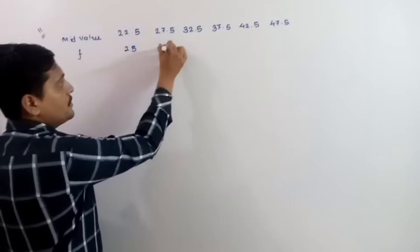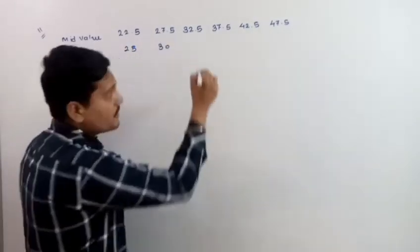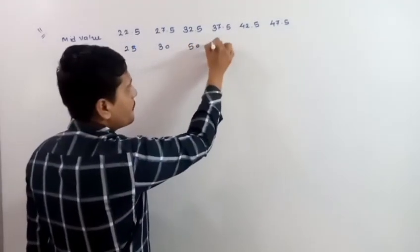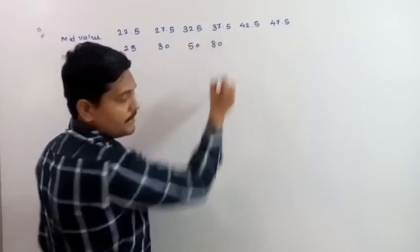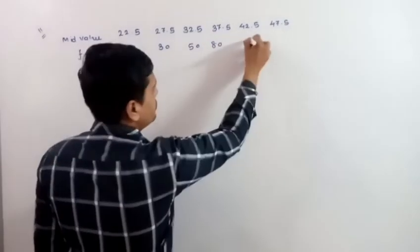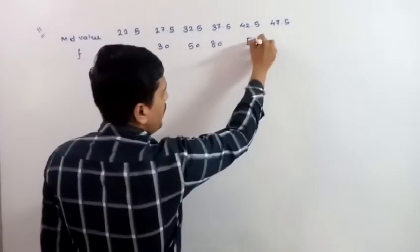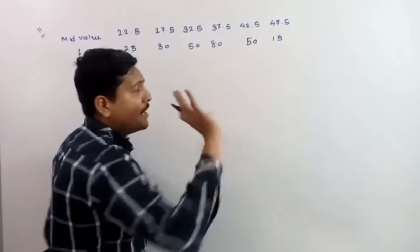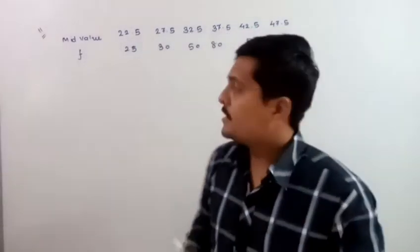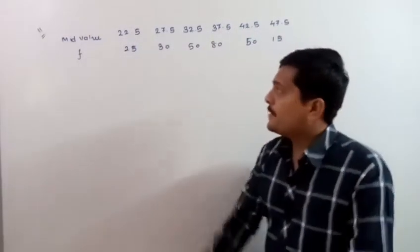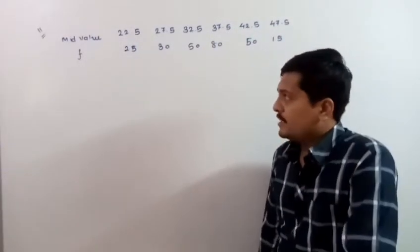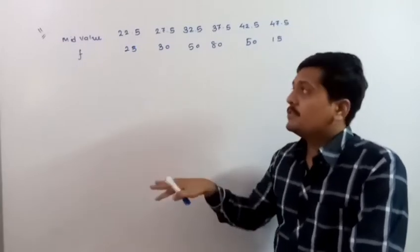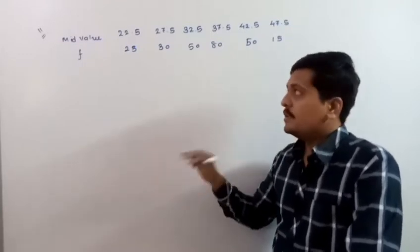The frequencies are: 30, 50, 80, 50 and 15. From these mid values, we need to find back the original class boundaries — the same classes, same class intervals. Let's see what we need to do.